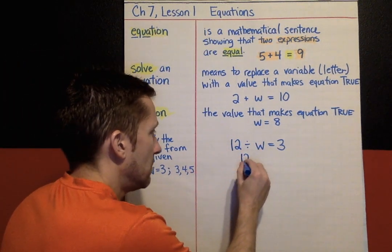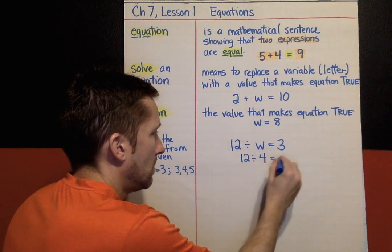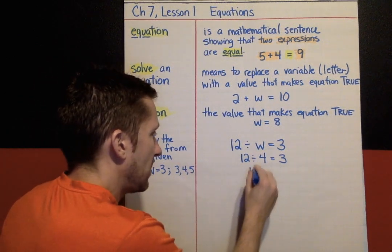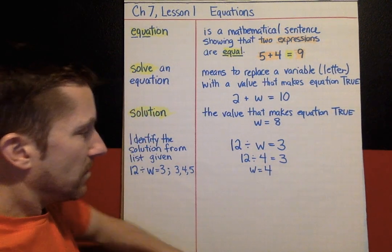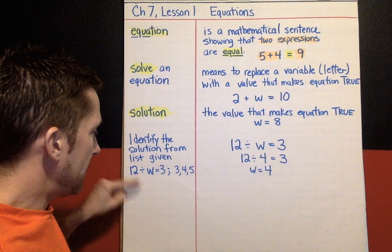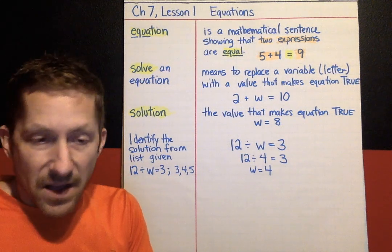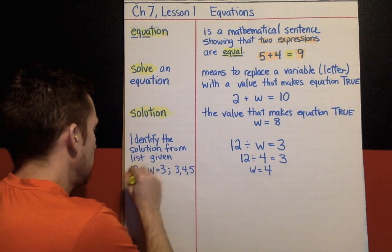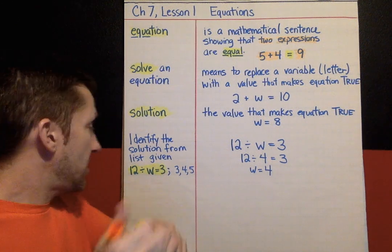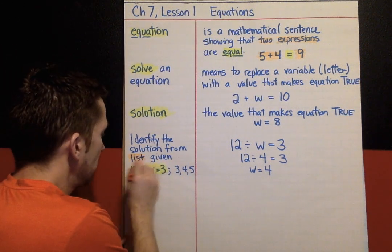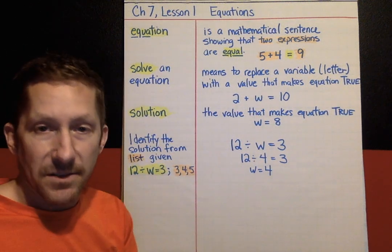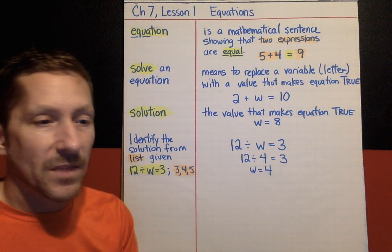4 is the solution that makes this true. From that list, I would pick w has to be 4 in order to make that work. Some of your practice today is exactly this. Here's an equation. And you have a list. It gives you an equation and then it gives you a list of possible answers. And you need to figure out which answer makes the equation true.